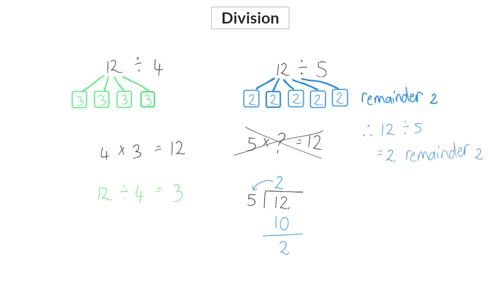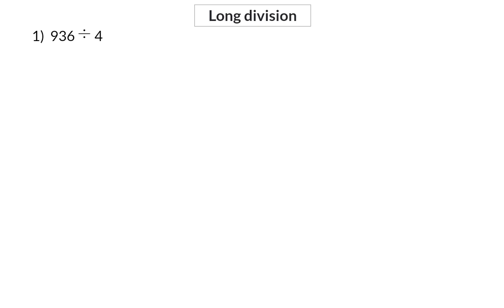For long division, we're going to repeat this process of dividing, multiplying, and subtracting a few times. In the first example, we need to divide 936 by 4, and for this, we're going to make use of long division.